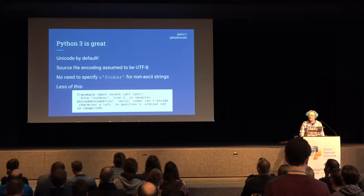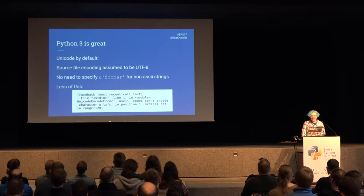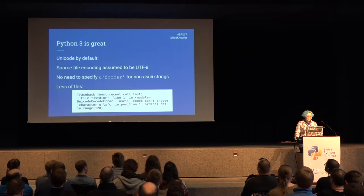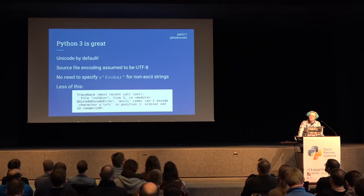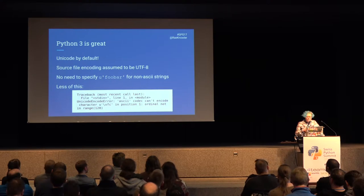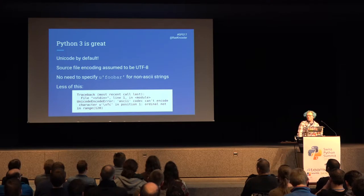It's kind of a world tour, but we start off at home: Python 3. I guess most of us are either using Python 3 now or want to, because Python 3 is awesome. The one thing I'm focusing on here, of course, is Unicode by default. Before, up until Python 2, you had strings which were ASCII, and for any special characters you needed Unicode strings prefaced with a U, like U foobah.